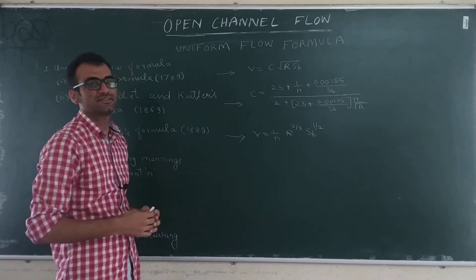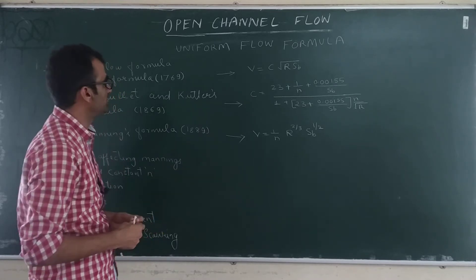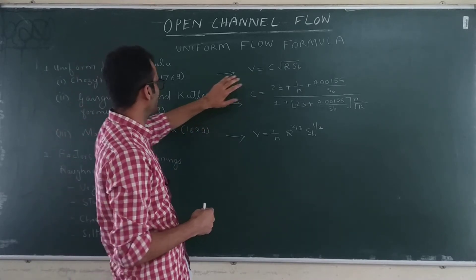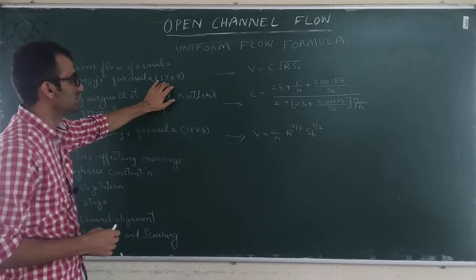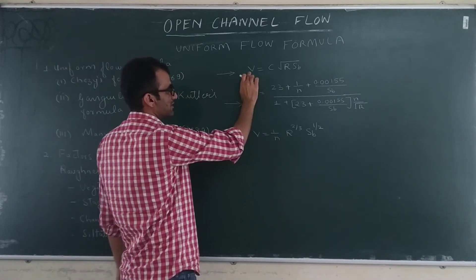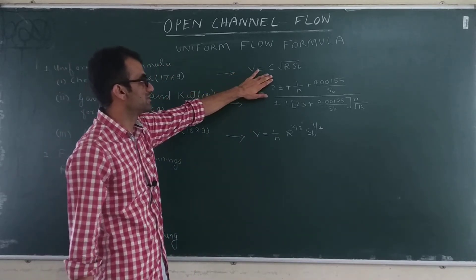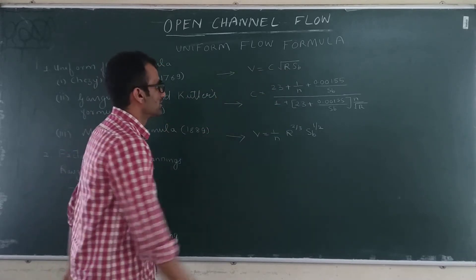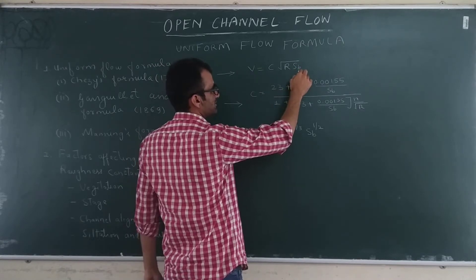The depth at which we achieve a uniform flow condition is called the normal depth. Today we will see some of the formulas. Last time we saw the very first formula, which was developed by Chezy in 1769 — that is called Chezy's formula. Chezy's formula gives the velocity of uniform flow as V = C√(R·Sb), where C is Chezy's constant, R is the hydraulic radius, and Sb is the bed slope.